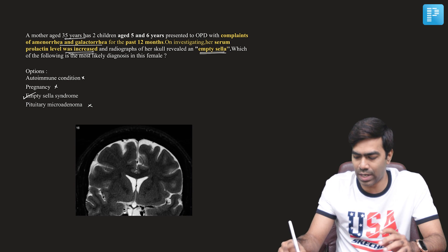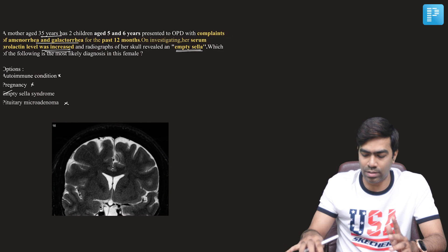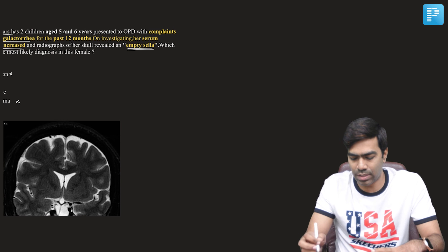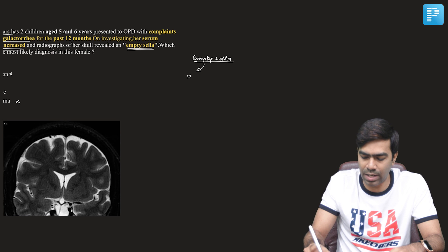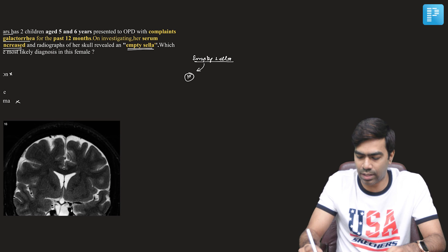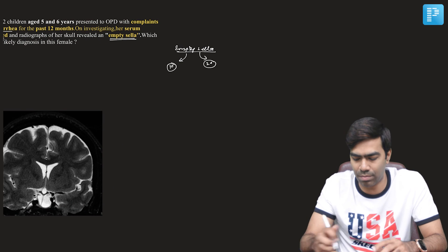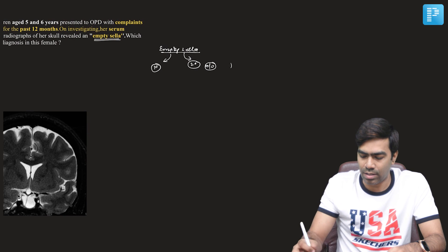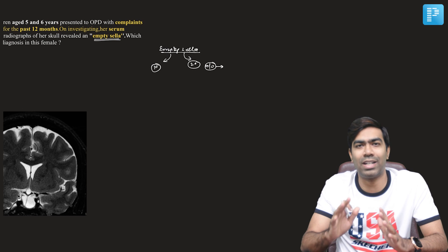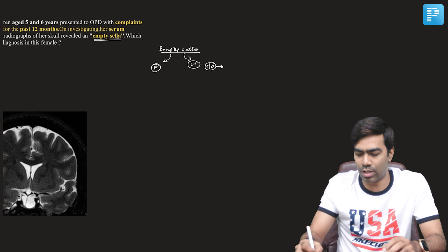What do we mean by empty sella, and why should empty sella present with hyperprolactinemia? To answer that, we need to know the different types of empty sella. Empty sella can be of two types: the first is a primary empty sella and the second is a secondary empty sella. Secondary empty sella is easy to comprehend — the patients will have a clear clinical history telling you there is some cause for the empty sella seen on imaging.